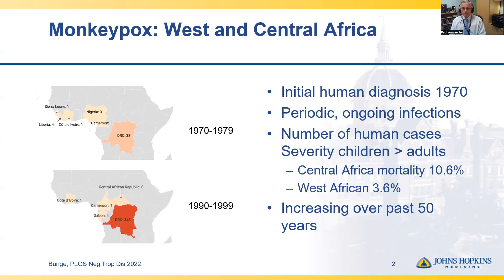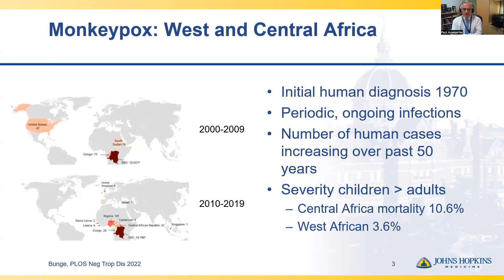There are two clades — a virologic term indicating enough differences in how monkeypox behaves to separate them. One is the Central Africa clade, mainly afflicting the Congolese, with a 10% mortality. The West African clade seems to be milder, but still with mortality, and tended to affect children more than adults. Cases have been increasing: in the early 2000s, over 10,000 cases were seen in the Congo, and by the last decade, nearly 20,000 with increased numbers elsewhere. The United States had 47 cases in 2003, which we'll discuss.